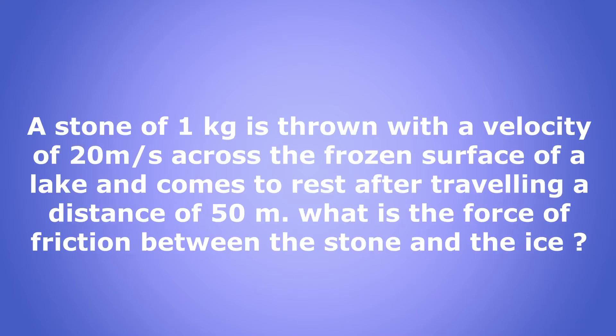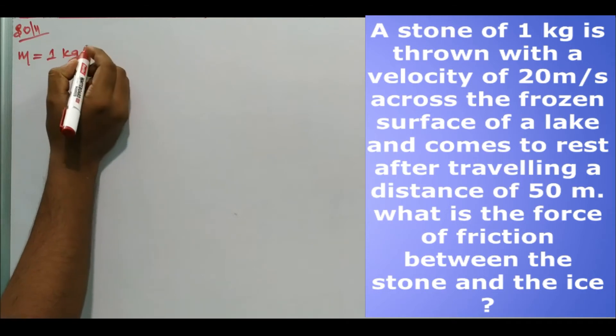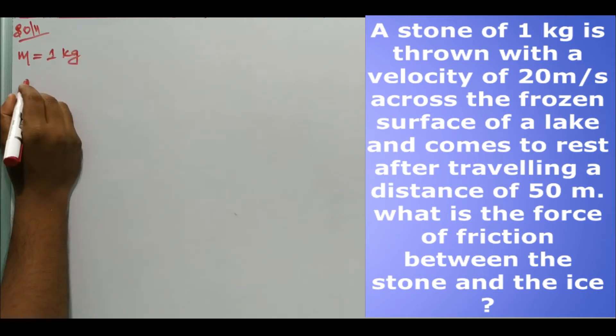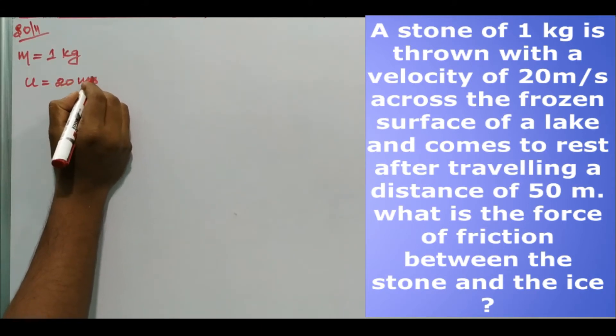Hello students. Today, ninth class CBC topic: force and laws of motion. In the back seat book exercises 6-1, a stone of 1 kg mass is thrown with a velocity of 20 meter per second across the frozen surface of a lake and comes to rest after traveling a distance of 50 meter. What is the force of friction between the stone and the ice? Mass of the stone is 1 kg, velocity of the stone is 20 meter per second.